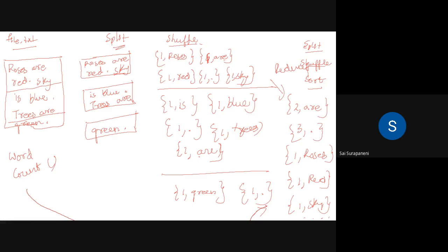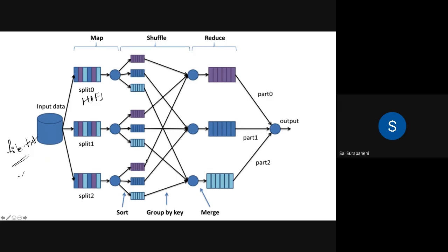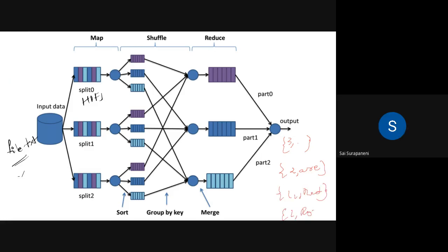Let's go back to see what we spoke about. Your file.txt which had 'roses are red' and all, was split into small chunks. All the single types or specific scenarios were sorted or shuffled and kept together, then they were reduced — the count was added — and the count on everything was added. This violet thing is added with this one and gets bigger, just like how we had three dots. It is reduced: at this point, now you have a single file which says 'I have three dots, two are's, one red, one roses.' This is the most basic example of MapReduce from the documentation.